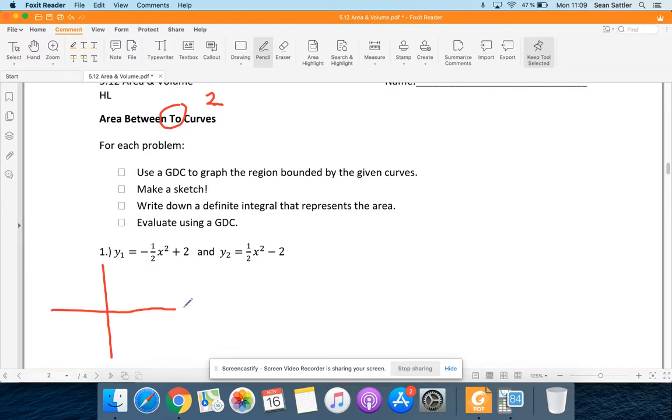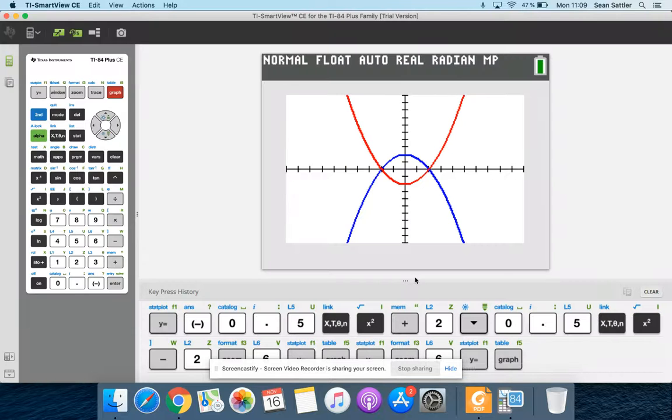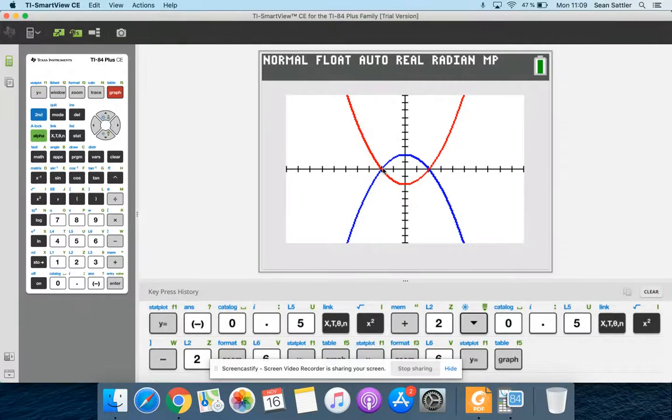So label the x and y-axis. So that's going to be a y-intercept up here and down here. And then we had x-intercepts at two and negative two. You might have to use second calc zero to find x-intercepts if they're decimals.